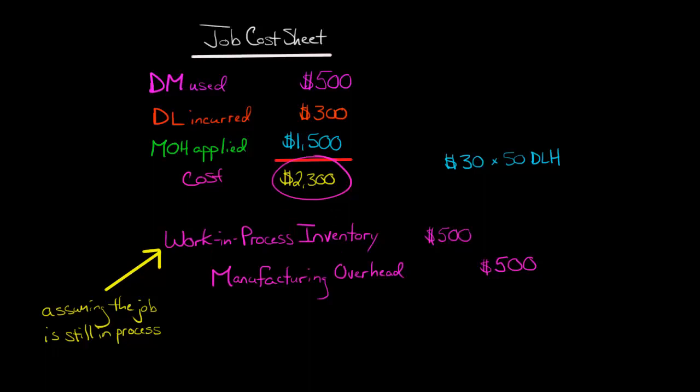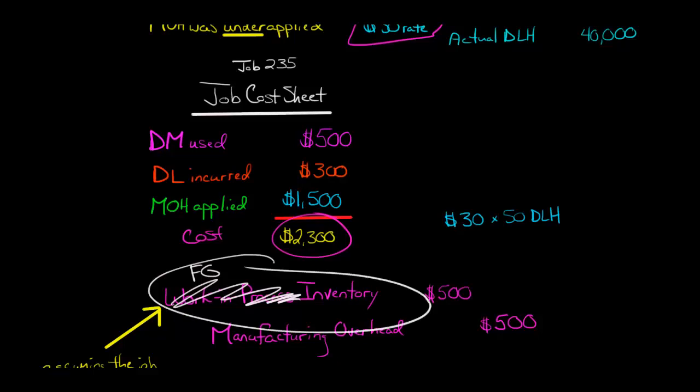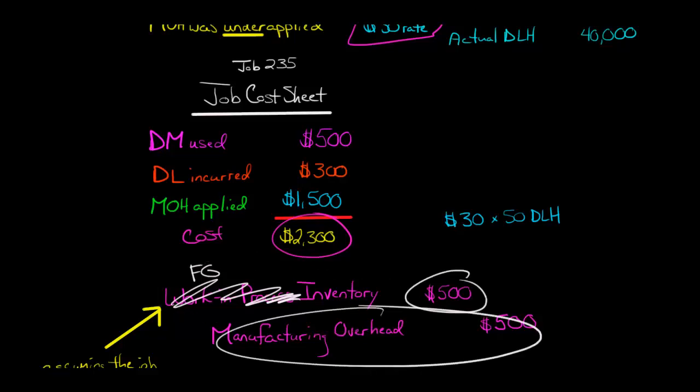If I told you that actually this job 235 has already been completed, it's no longer in process, then in that case, you still have the same journal entry, but you would debit finished goods inventory. Finished goods inventory would be debited for $500, and manufacturing overhead would be credited for $500. Think about it like this: you didn't apply enough manufacturing overhead. It's underapplied. So you're basically just going back and fixing it. You're going back to the job and saying we didn't apply enough. Let's put in an extra $500.